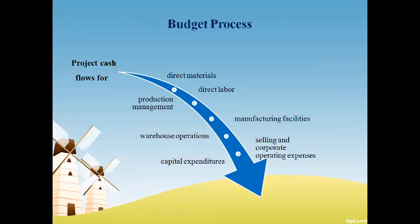The budget process includes all the operations and costs of the company. It includes estimating the timing and magnitude of direct material, direct labor, and manufacturing overhead costs. It also includes estimating the cost of warehouse operations that support the production process and the cost of operating the business, acquiring, and supporting customers. The capital expenditures budget includes long-term decisions and does the proper analysis to ensure that investments in assets will give an acceptable return.